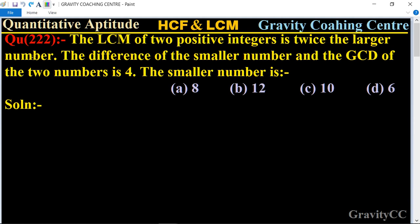Quantitative aptitude chapter HCF and LCM, question number 222. The LCM of two positive integers is twice the larger number, and the difference of the smaller number and the GCD of the two numbers is 4. So the smaller number is what?